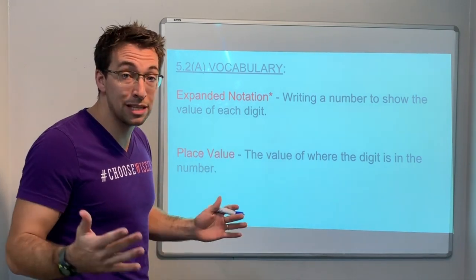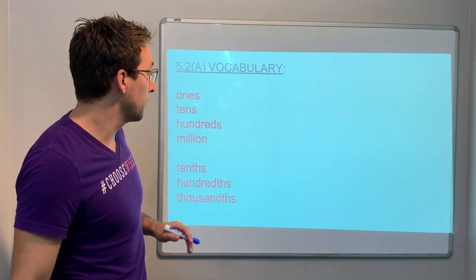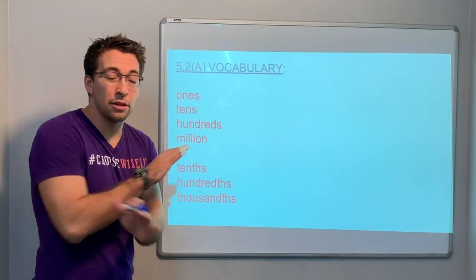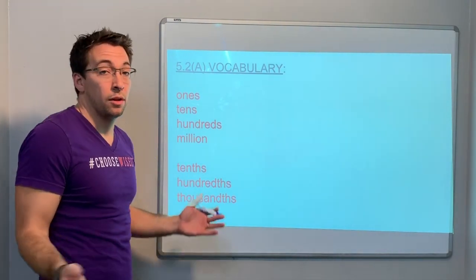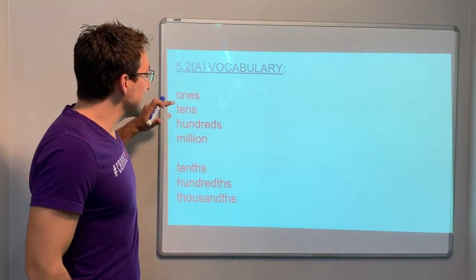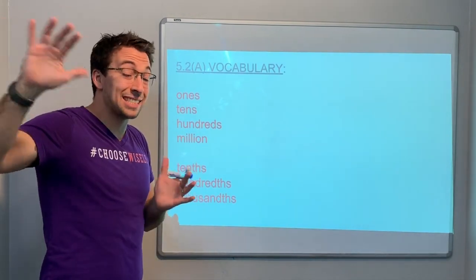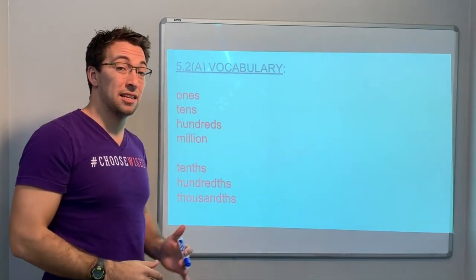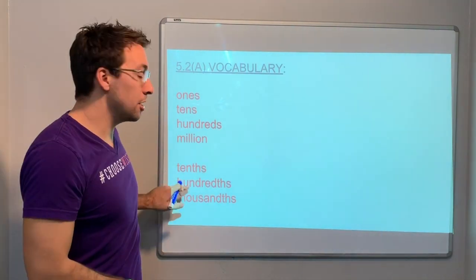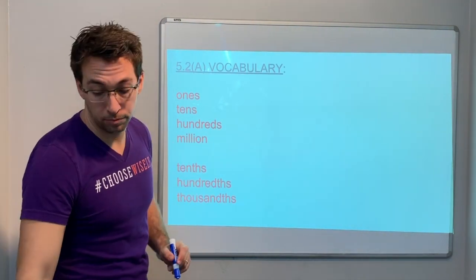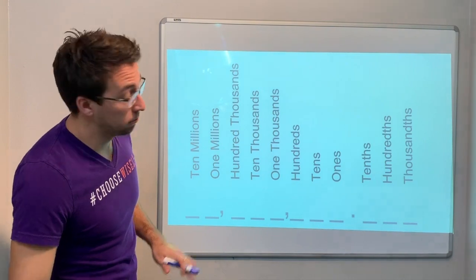Vocabulary. This is the vocab that you need to know for fifth grade: ones, tens, hundreds, millions. You have to know all the way to the millions place - that's seven digits on the left side of the decimal - and you have to know tenths, hundredths, thousandths.